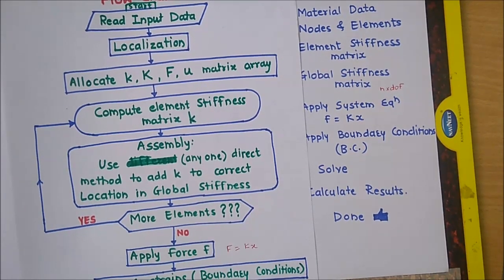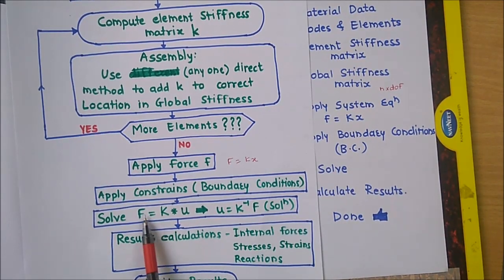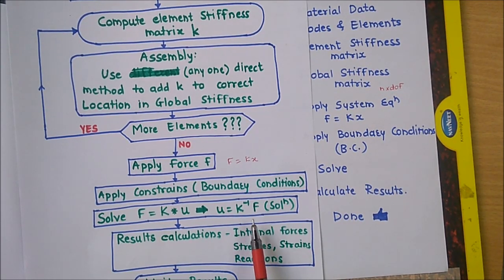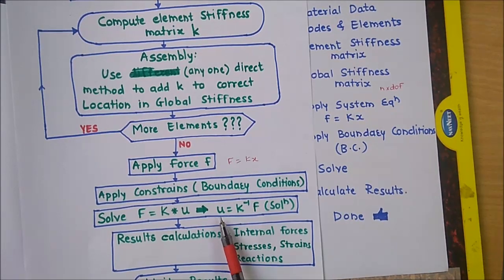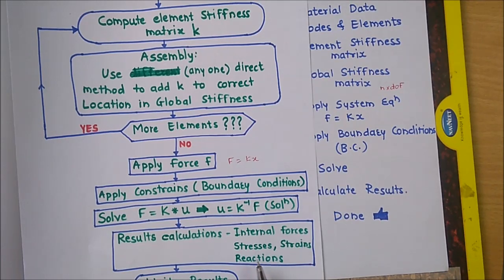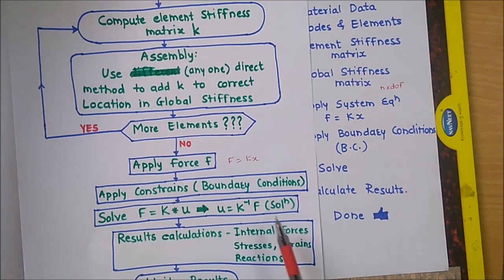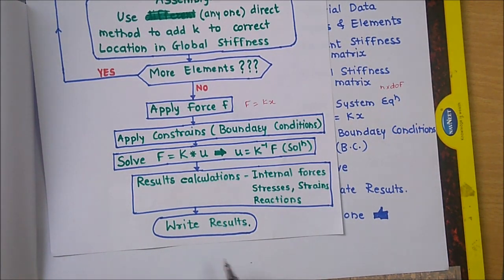In the next step we have to solve F = Ku. We can use any method — the inverse method or Gauss elimination method — to solve this problem and prepare code for that. After getting the result, we will have the displacements. Then we have to calculate the results: internal forces, stress, strains, and reactions after getting the U values. The last step is to write the results as per the nodes and elements in a table format, and that will complete your computer code.